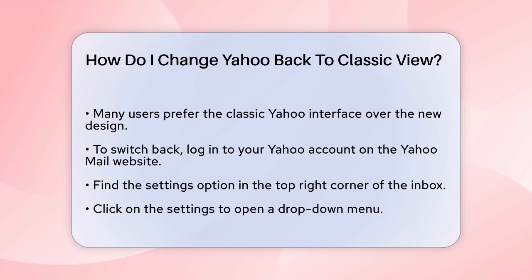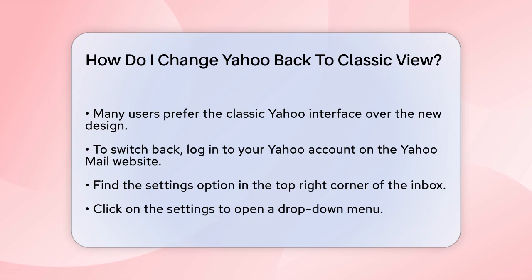First, you need to log into your Yahoo account. Go to the Yahoo Mail website and enter your credentials to access your inbox. Once you're in your inbox, look for the settings option — this is usually found at the top right corner of the page. Click on it and you'll see a drop-down menu.